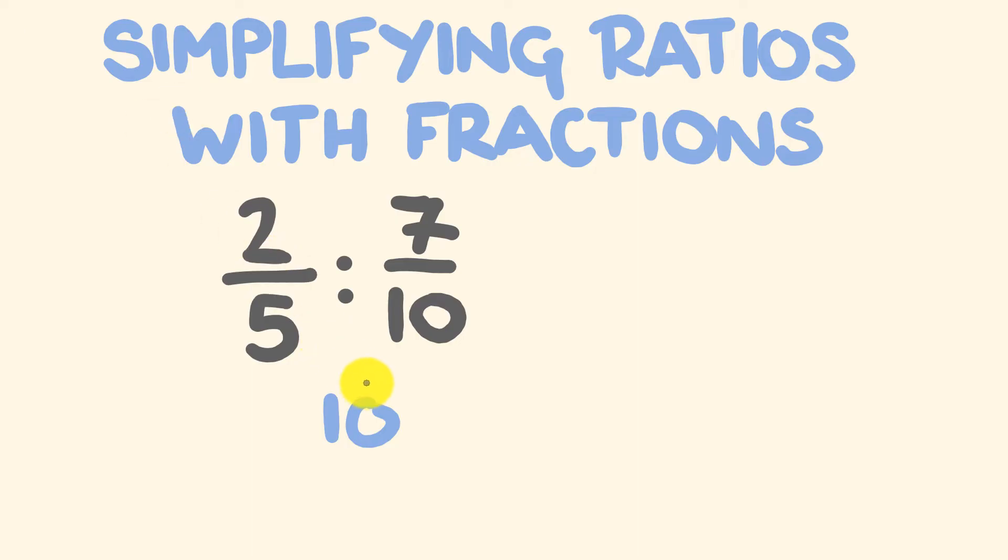So it's only 2 fifths that we need to change. To change 2 fifths into a number over 10, we'd need to get this 5 and multiply it by 2. And what we do to the bottom, we do to the top. So let's do that. 2 times 2 is equal to 4, 5 times 2 is equal to 10. So the equivalent fraction of 2 fifths is 4 tenths.